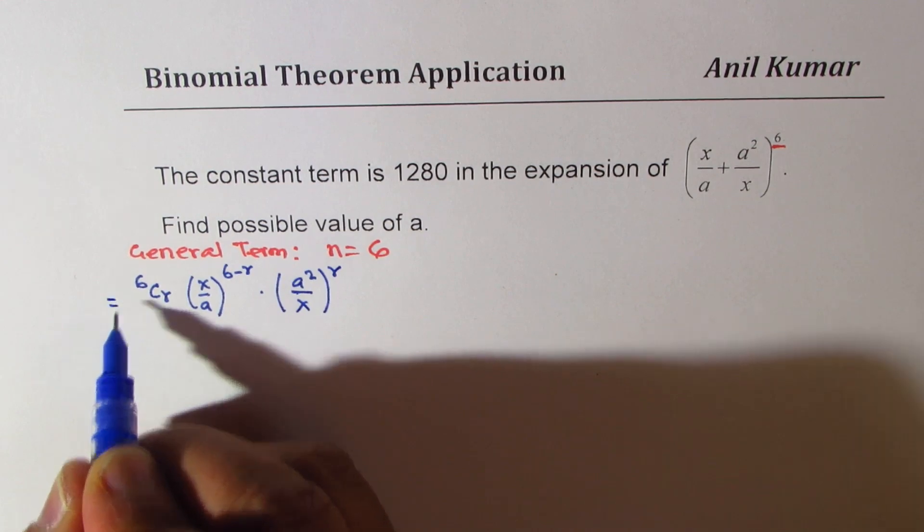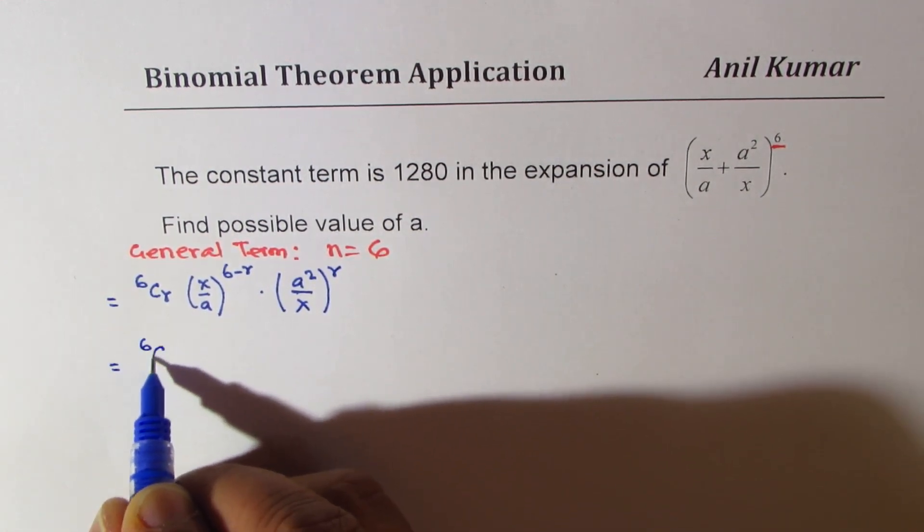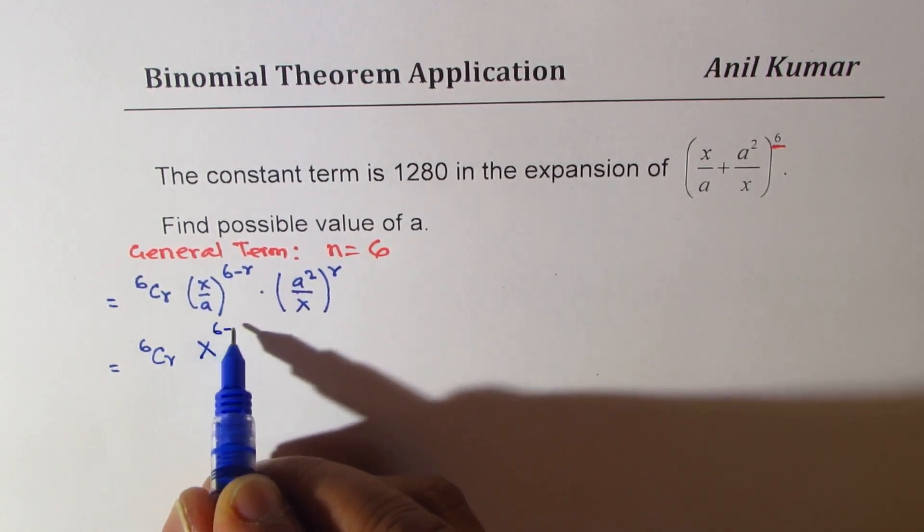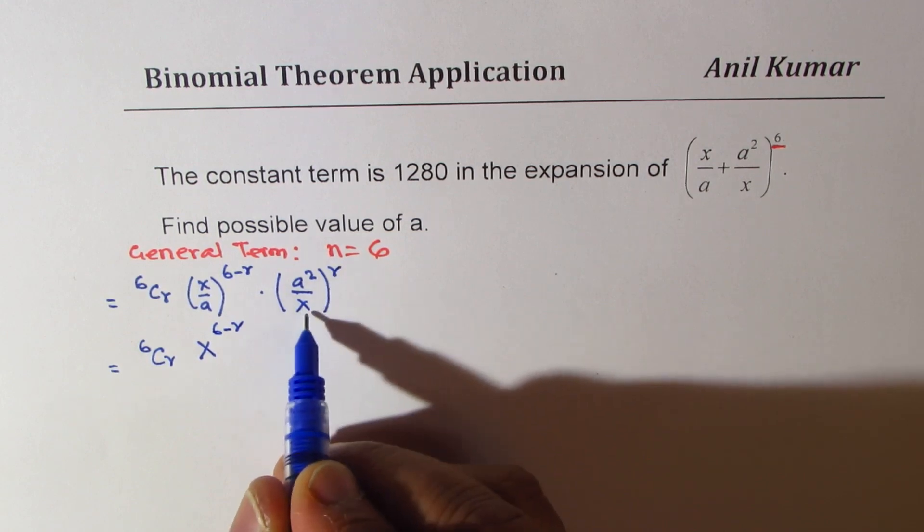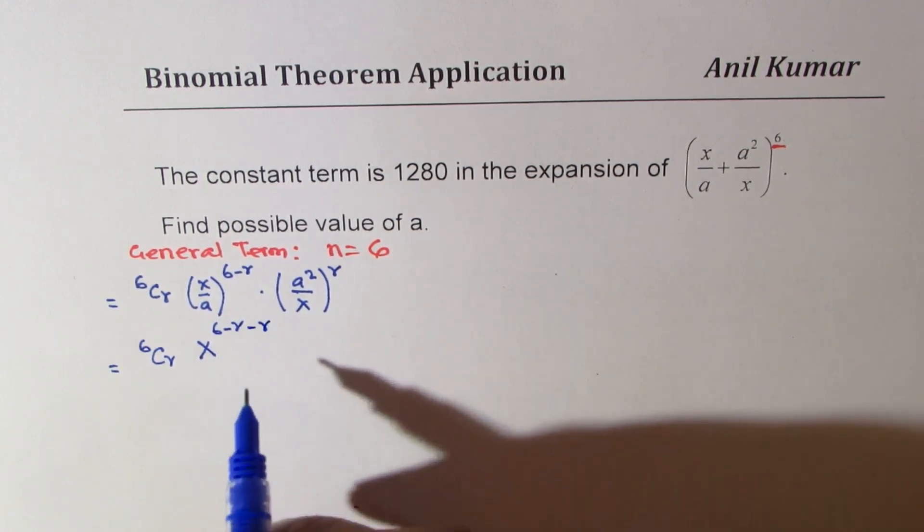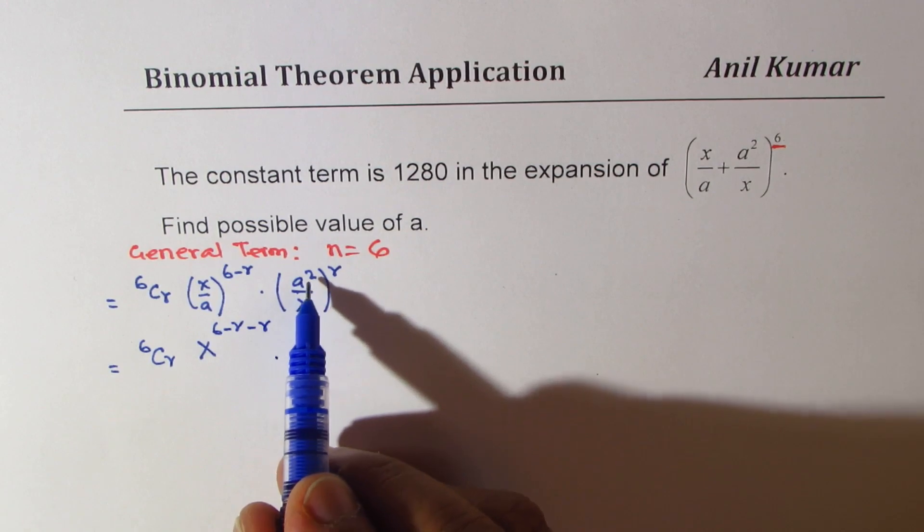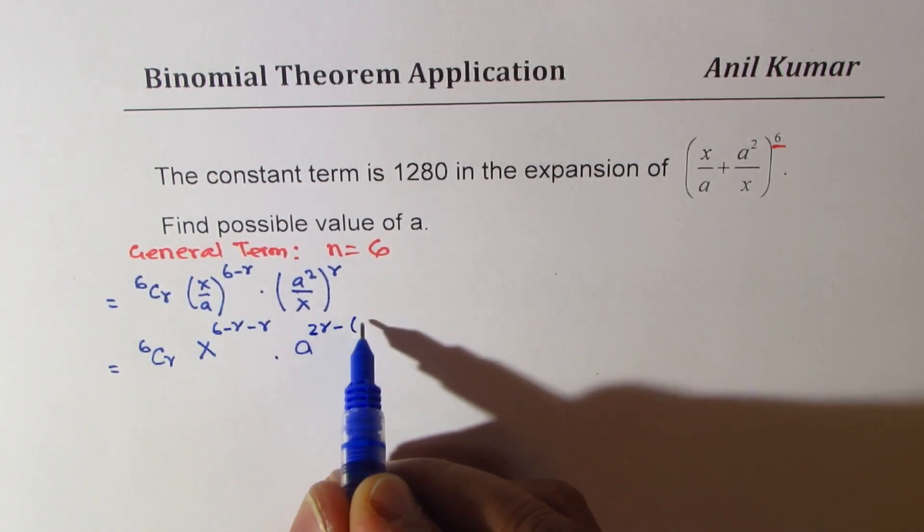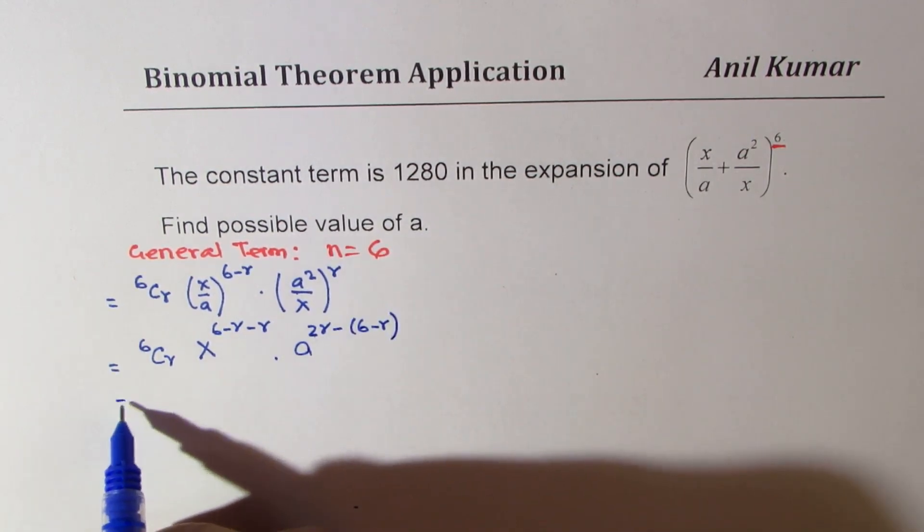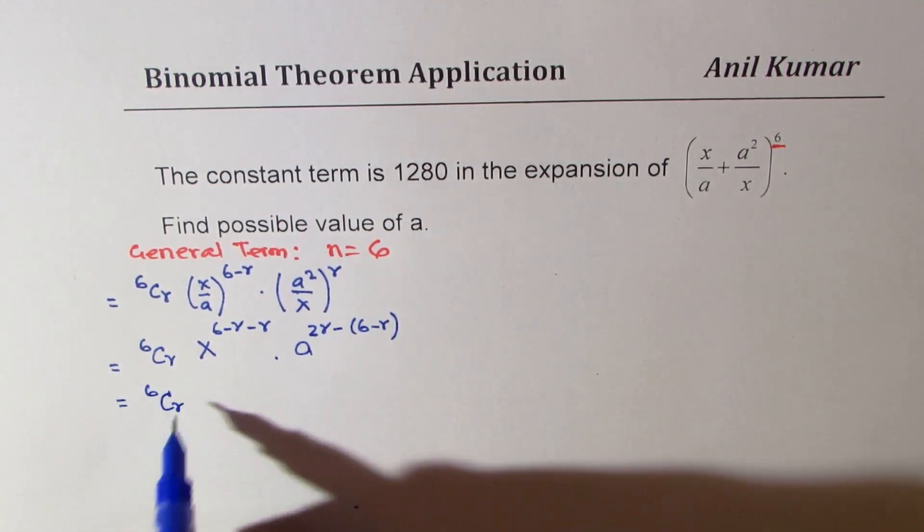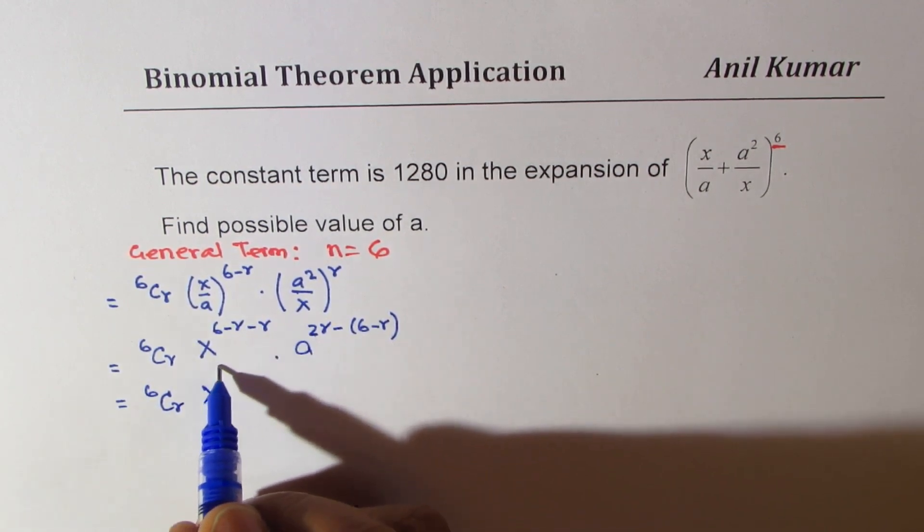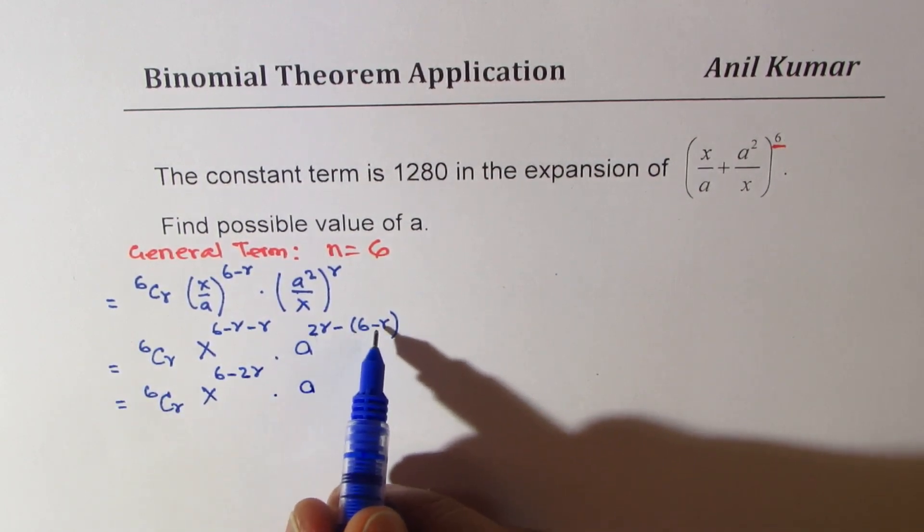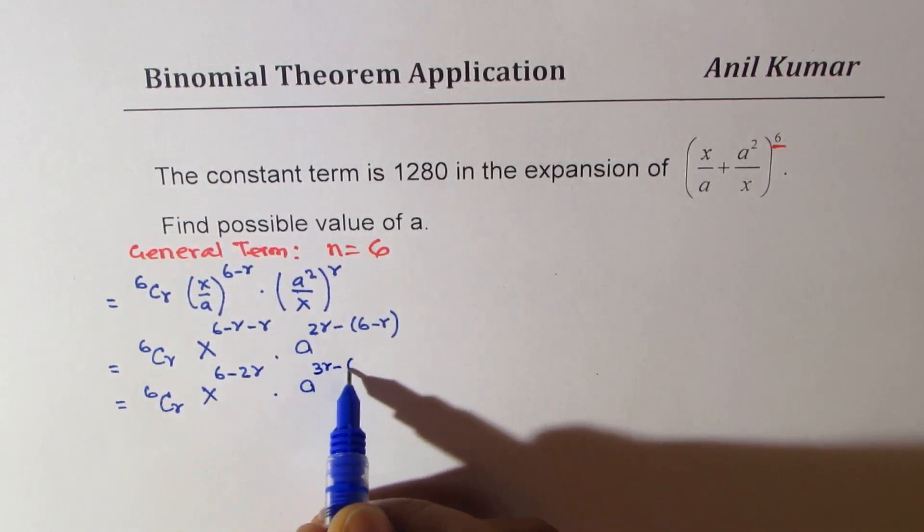Now let's try to simplify this. So we get 6Cr x^(6-r) and here we have -r since it is in the denominator. As far as a is concerned, we have 2r and here minus (6-r). This could be further simplified: 6Cr x^(6-2r) and a^(3r-6).